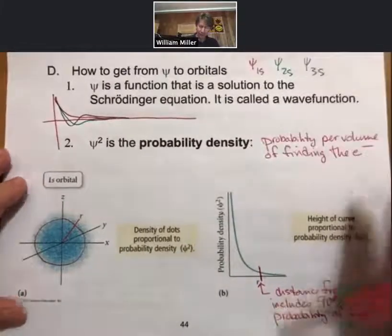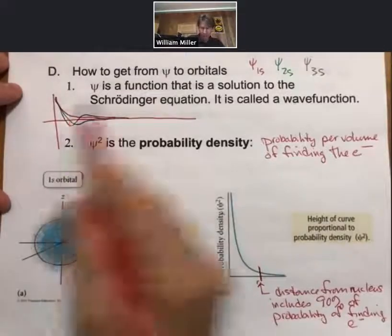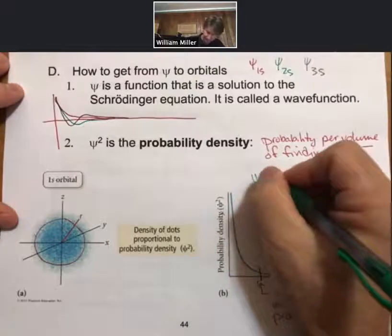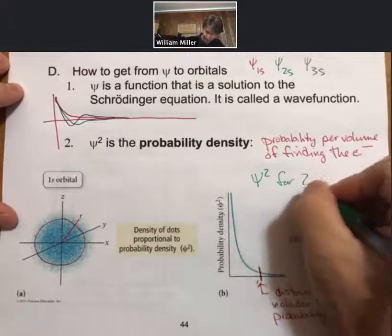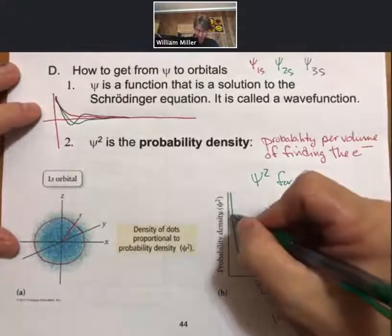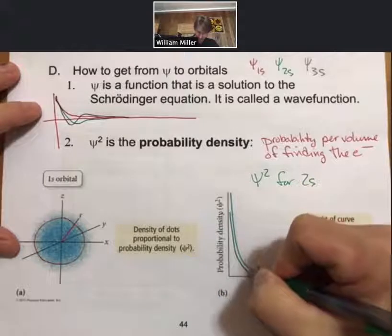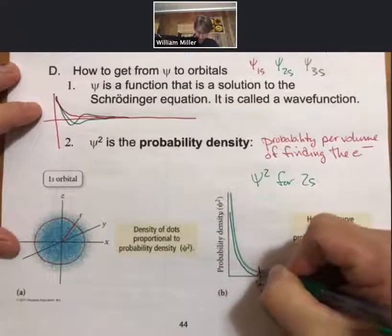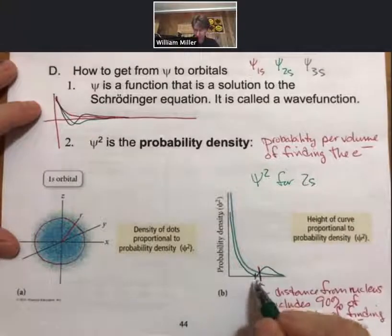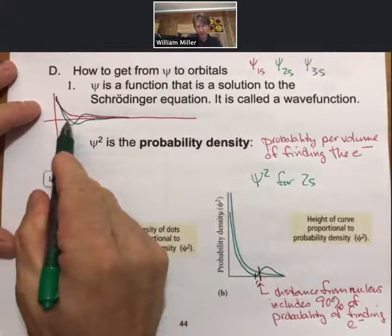And if we were to do this, the probability density for 2s, so the probability density would come down, touch, come up, and go down. And this point right here, where it touches, is where it actually crosses the x-axis up here.